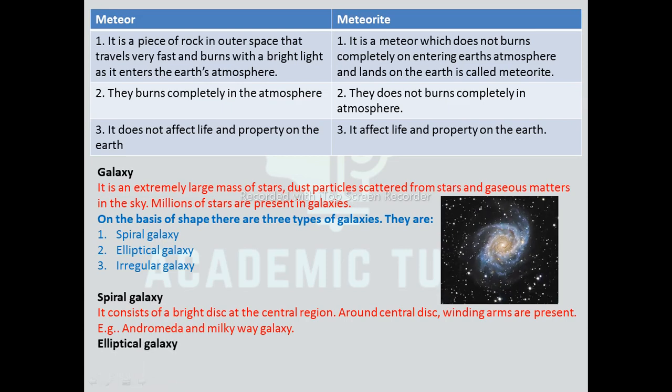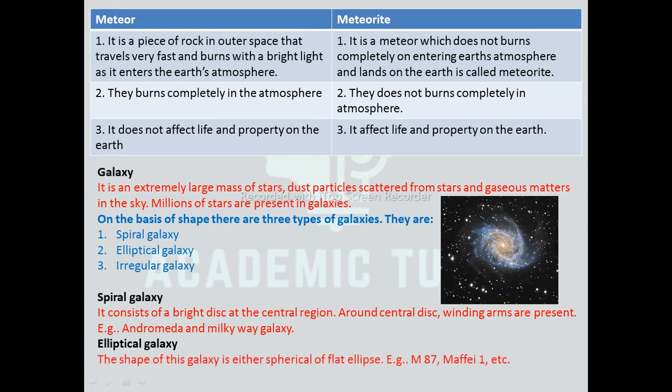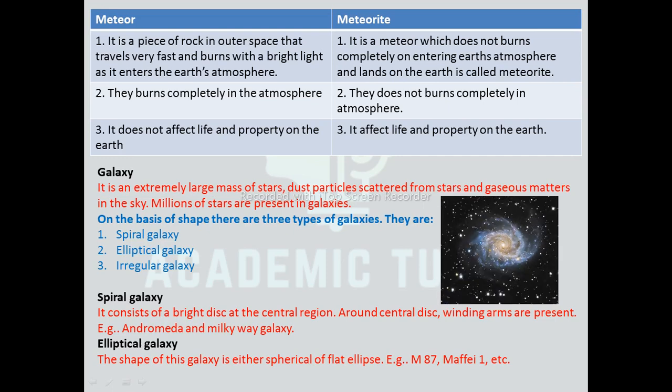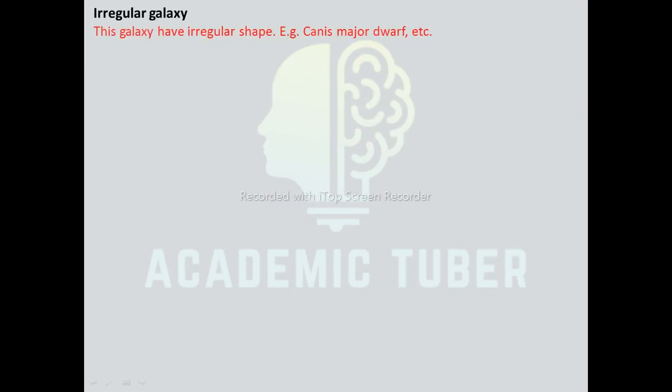Elliptical galaxy: elliptical galaxies are shaped as a sphere or a flat ellipse. The center is bulged and bright light is emitted from it. Examples: M87, M1, etc. Irregular galaxy: irregular galaxies do not have a regular shape; they have bright stars at the center. Example: Canis Major Dwarf. According to scientists, galaxies are formed from large gaseous masses, dust particles, and the distance of a galaxy can be estimated by studying infrared rays, radio waves, ultraviolet rays, and X-rays coming from them.